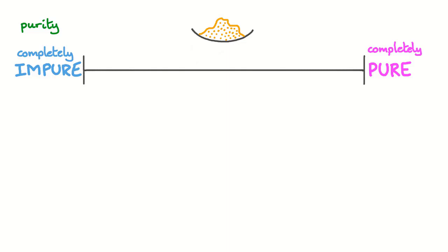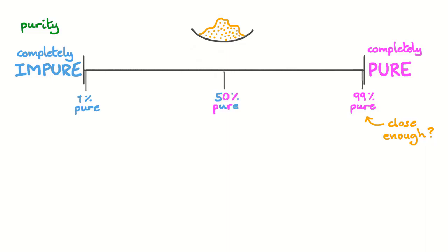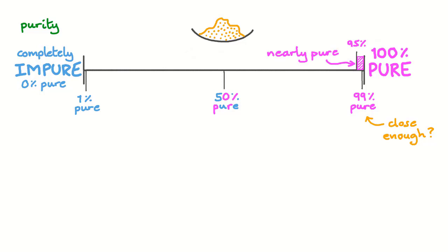We can think of purity as lying on a spectrum between completely impure and completely pure. If we have a sample that's 99% the chemical we want, that's usually close enough. A sample might be significantly less pure than this, so we can imagine a range which we measure in percentage points. A pure sample is 100% pure, and we could imagine a sample that doesn't contain any of the chemical we want to be 0% pure, although we wouldn't use that language very often. Once we get above 95%, you might hear chemicals described as nearly pure, because for many applications that's good enough.